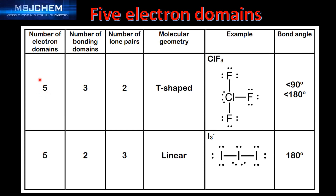Next we look at five electron domains with three bonding domains and two lone pairs of electrons. The molecular geometry is T-shaped. An example is chlorine trifluoride, and you can see the Lewis structure here. The bond angles are less than 90 degrees and less than 180 degrees. These bond angles are caused by the extra repulsion of the two lone pairs of electrons on the chlorine atom.